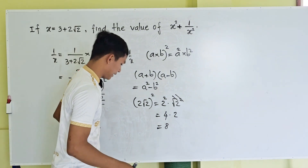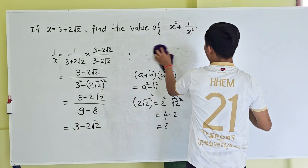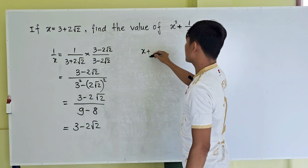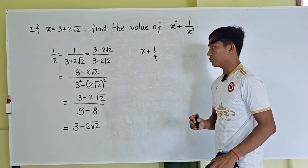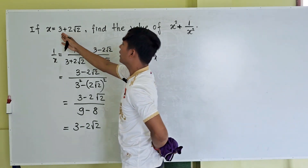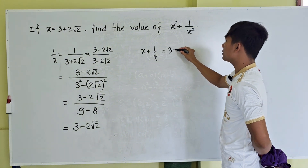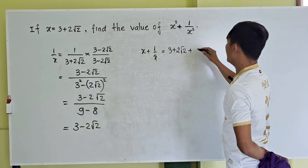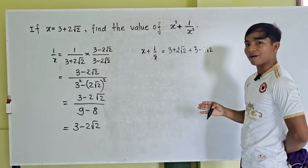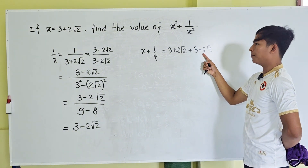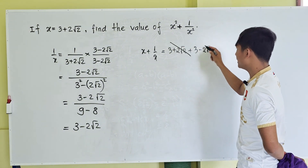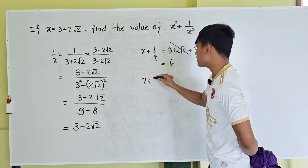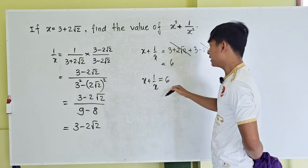Now I find the value of 1 divided by x, and we add x plus 1 divided by x. We replace x with 3 plus 2 square root 2, and 1 divided by x with 3 minus 2 square root 2. The 2 square root 2 and minus 2 square root 2 cancel out, and we get 3 plus 3 equals 6. So x plus 1 divided by x equals 6.